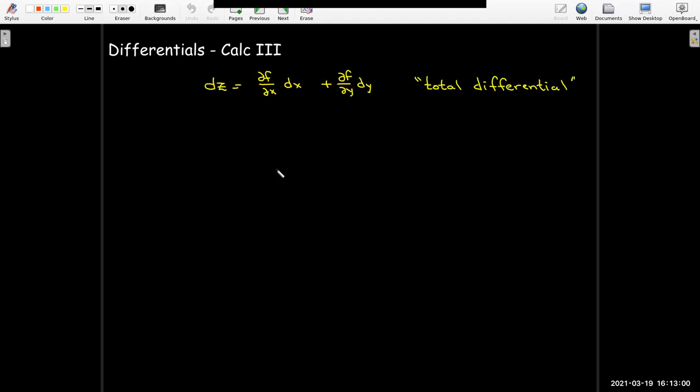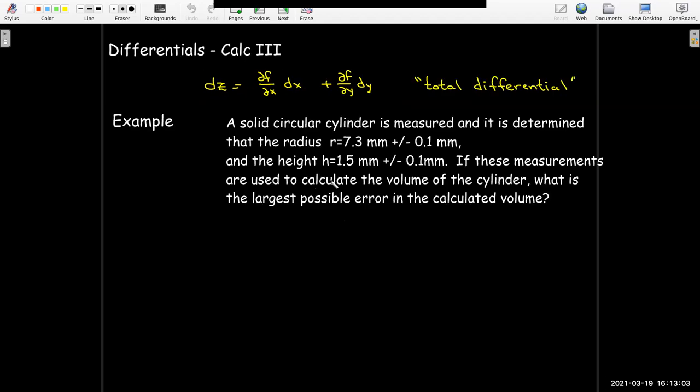So how can we make use of this? Here's an example. Suppose you have a solid cylinder. Based on the dimensions, I really should call this a disk because it's much wider than it is tall. Its radius is 7.3 millimeters, plus or minus 0.1 millimeters. The height is measured to be 1.5 millimeters, plus or minus 0.1 millimeters. If we use these measurements, so the 7.3 and the 1.5, to calculate the volume, what's the largest possible error introduced by this measurement error?